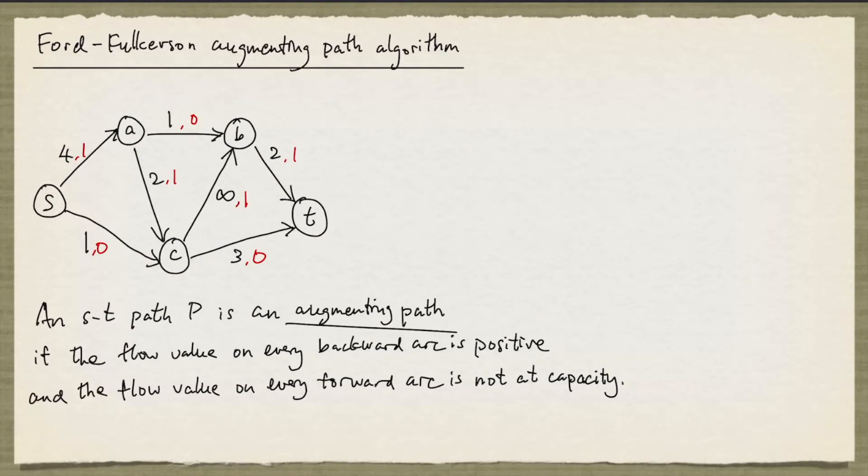We have the same s-t network here, and we also have an s-t flow given by the numbers in red. It's easy to check that this is an s-t flow. For example, at nodes A, B, and C, the flow conservation constraints are satisfied. The Ford-Fulkerson algorithm has a key ingredient: to look for what is known as an augmenting path. We say that an s-t path P is an augmenting path if the flow value on every backward arc is positive, and the flow value on every forward arc is not at capacity.